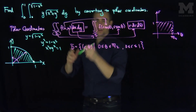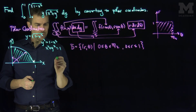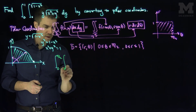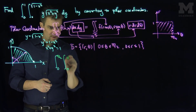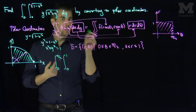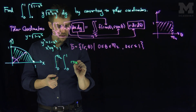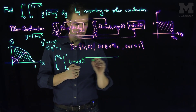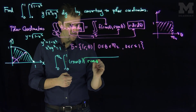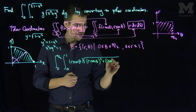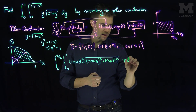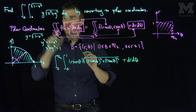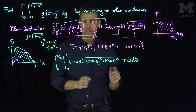Now we simply change all the variables. Our limits of integration become: theta goes between 0 and pi over 2, the radius goes between 0 and 1. Then I have y — I replace y with r sine theta — giving r sine theta. And then I have the square root of x squared plus y squared, which becomes the square root of (r cosine theta) squared plus (r sine theta) squared. Then I have an r dr d theta. I've changed my limits, my integrand function, and my area differential — all three things.